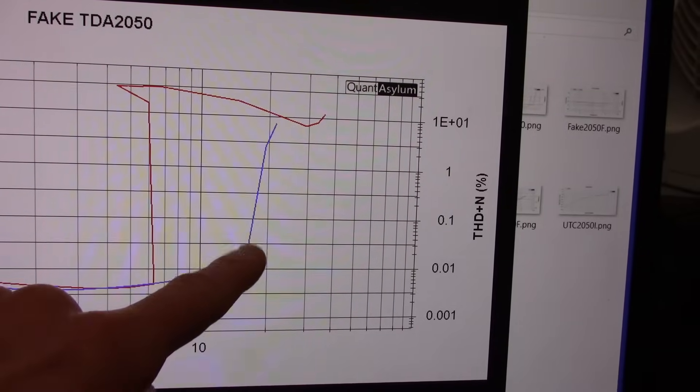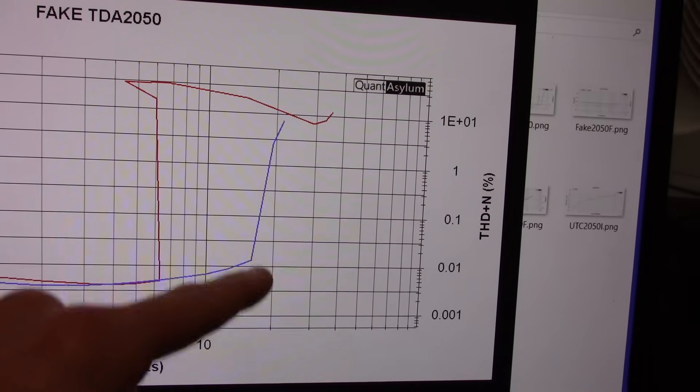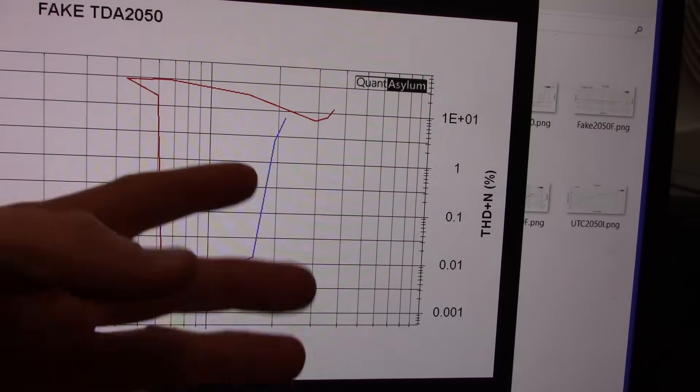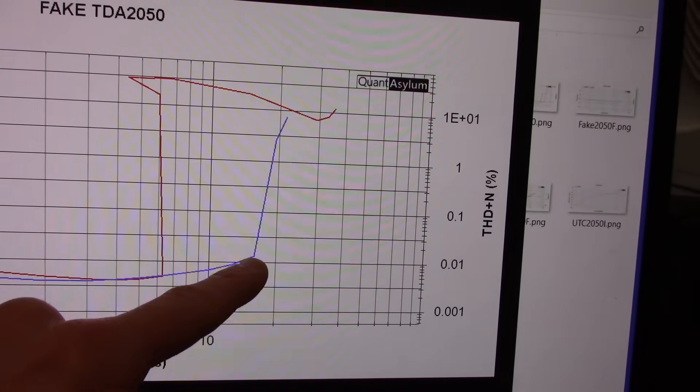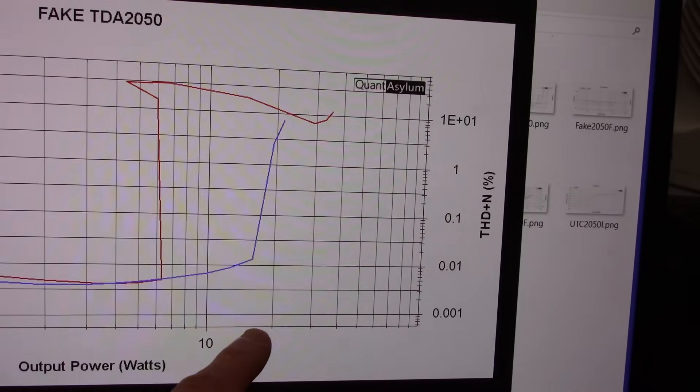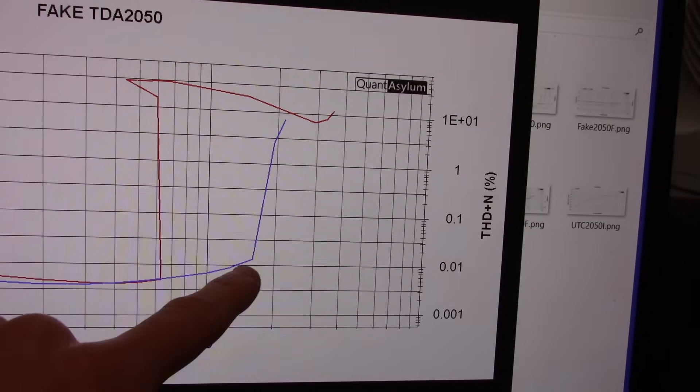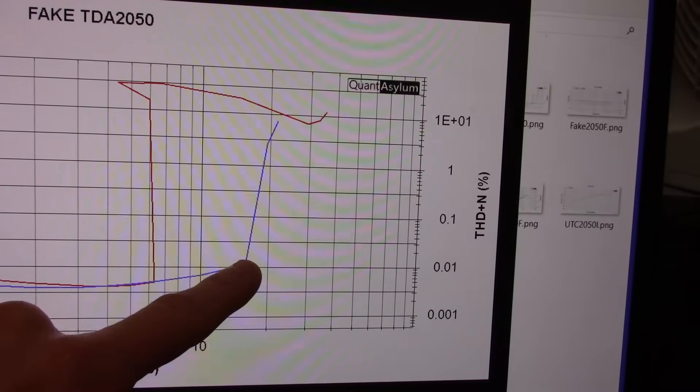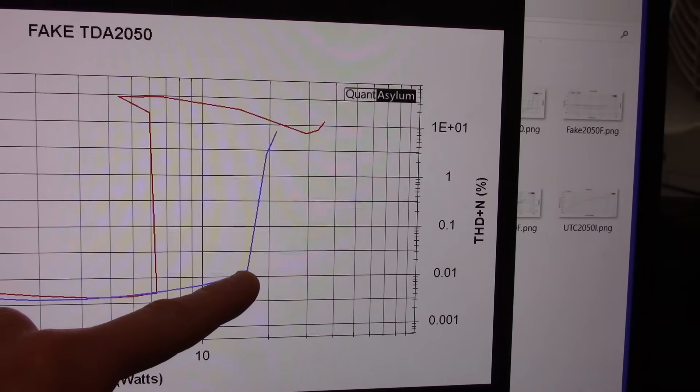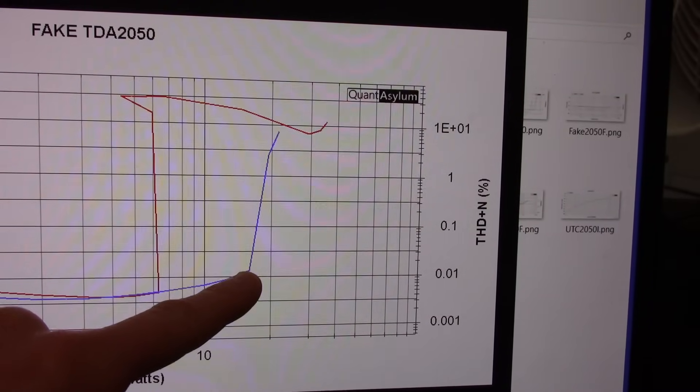That might be more like 16. I kind of wish this thing you could get more precise measurements, but I don't know how to do that. No matter how far I zoom in, it doesn't give me any hash marks or anything. But yeah, it's not doing quite as well as the TDA2050 or the UTC version.